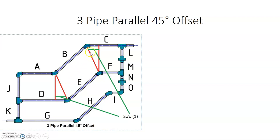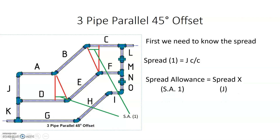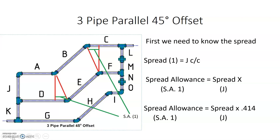Going through the upper level of the offset, we run into the same spread allowance concept between C and F. Drawing a center line from the 45 of F all the way up to C, we see that C is a little bit longer — that distance between the two red center lines is its spread allowance. We call this spread allowance 1 (SA1). The formula is: SA1 = spread × 0.414, where spread equals J, the center-to-center dimension at the top.